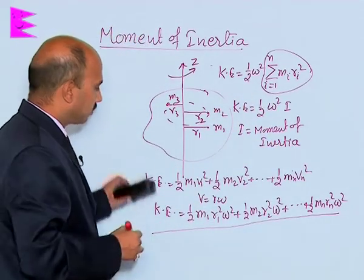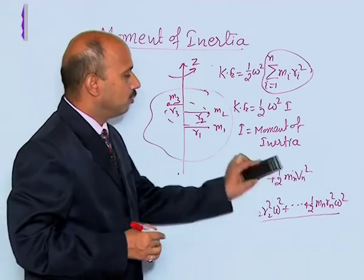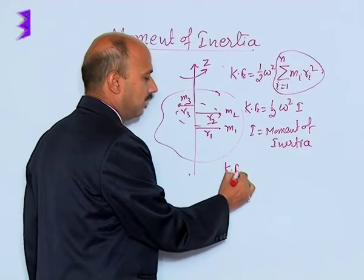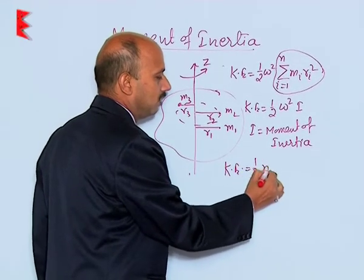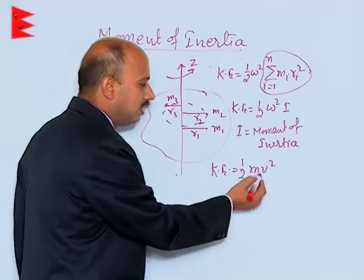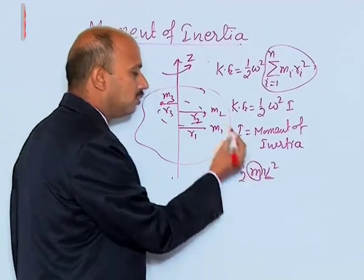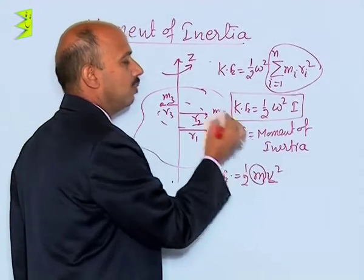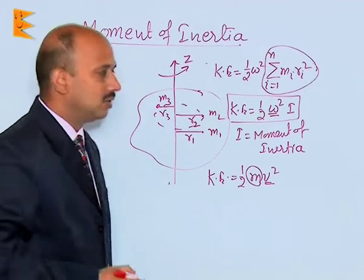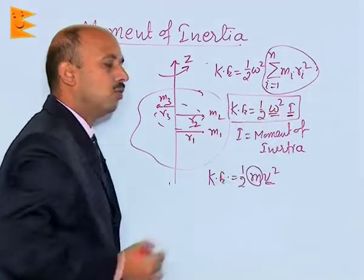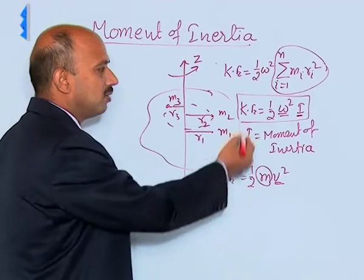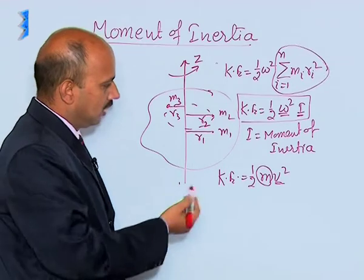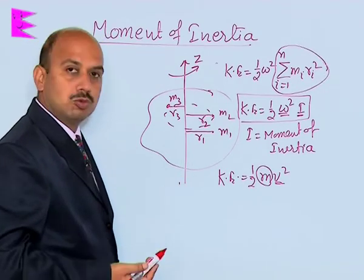Now, we have already seen the formula for kinetic energy in linear translational motion: kinetic energy equals half m v squared. In that case, v is the velocity and m is the mass, which plays the role of inertia. Here, kinetic energy in rotational motion is half I omega squared, where omega is the angular velocity and I is the moment of inertia. So moment of inertia is the analog of inertia in translational motion.